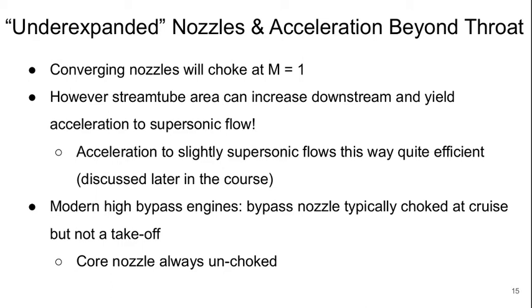And we'll talk about this a little bit later in the course. But in modern high bypass ratio jet engines, we'll find that typically the bypass nozzle is actually choked at cruise, or more than choked at cruise. So it's taking advantage of this efficient expansion to a slightly supersonic condition. But it won't be choked at takeoff. And the core flow nozzle is never choked.